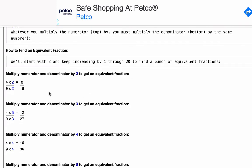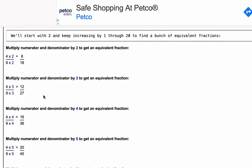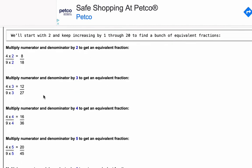So first, we start with 4 ninths and we multiply top and bottom by 2, and we get 8 eighteenths — that is an equivalent fraction of 4 ninths. Next, we increment to 3 and multiply 4 ninths top and bottom by 3, and we get 12 over 27.